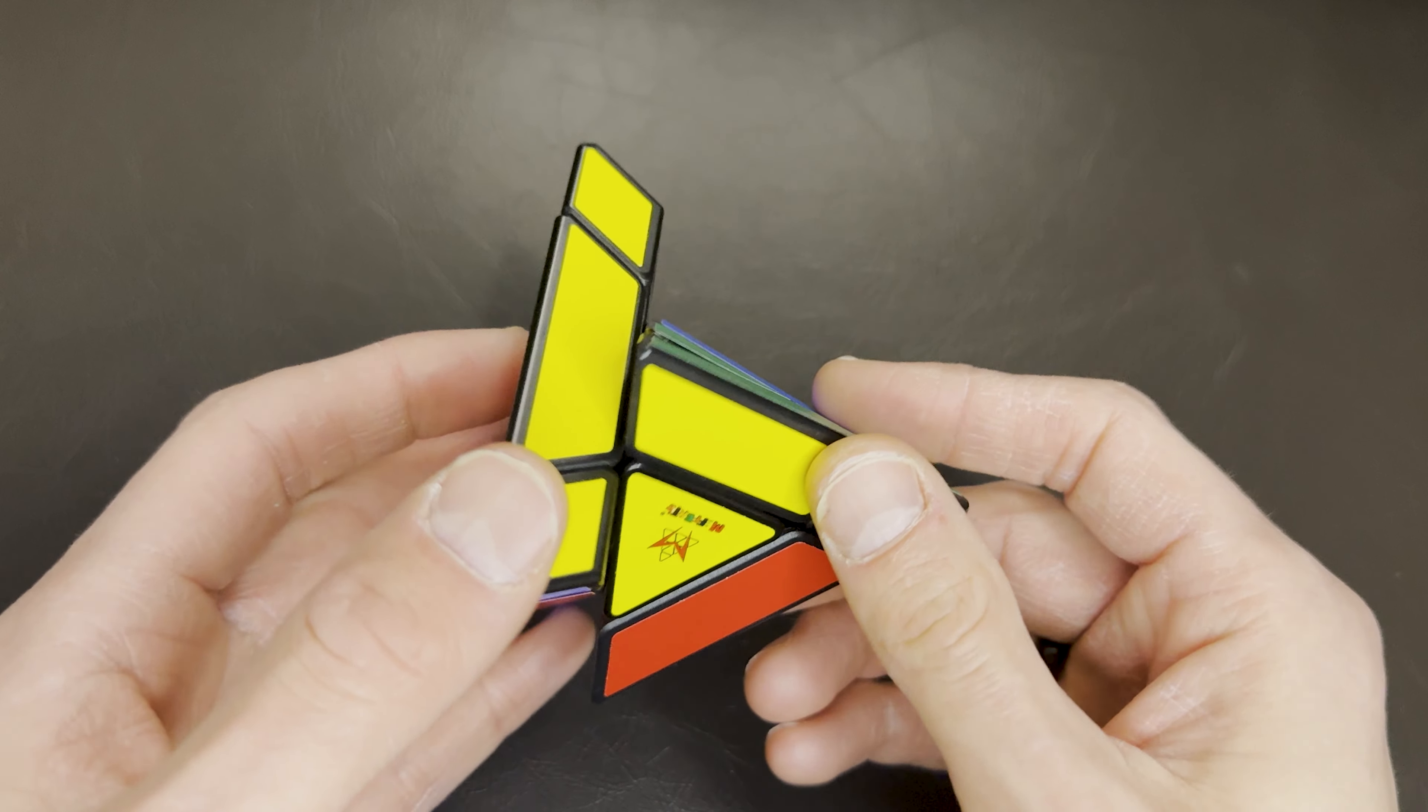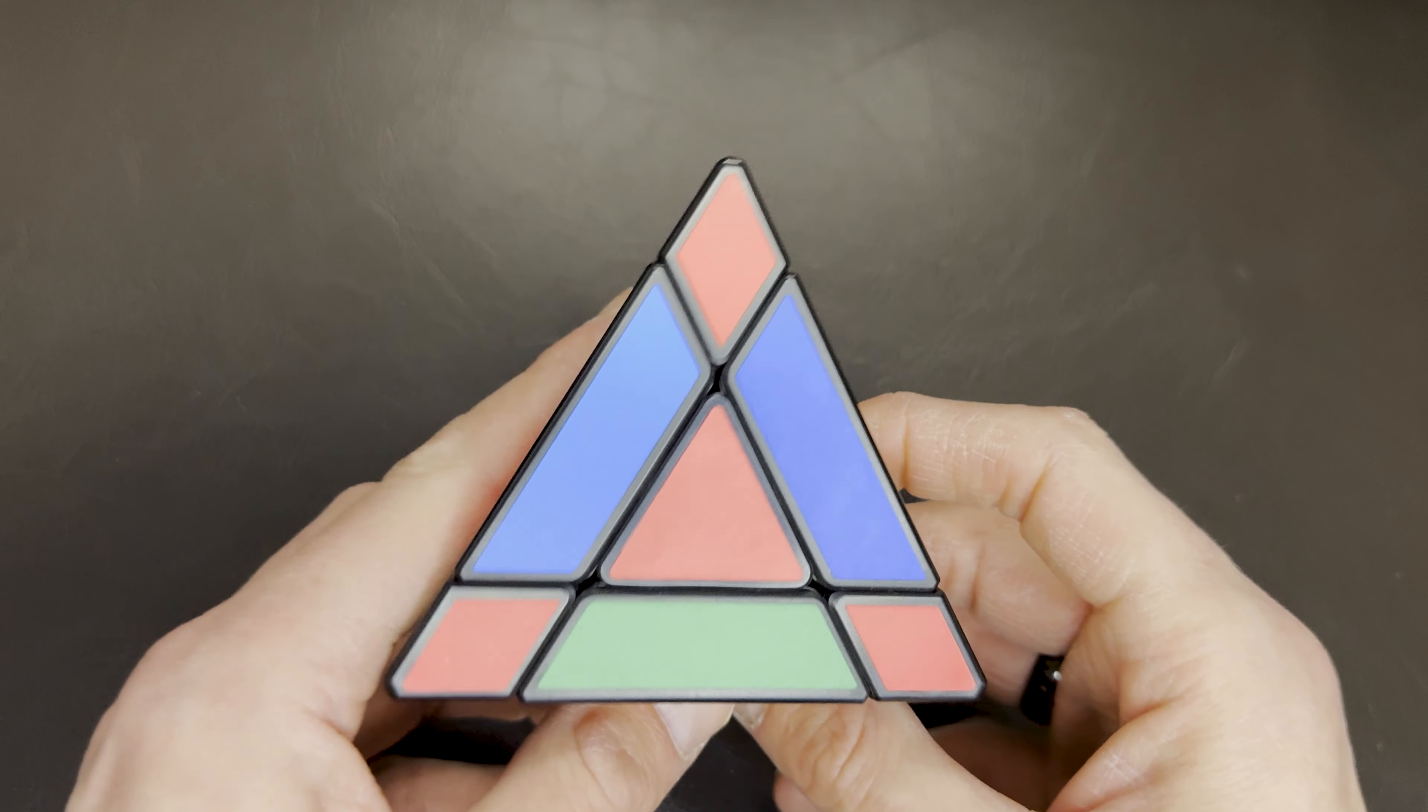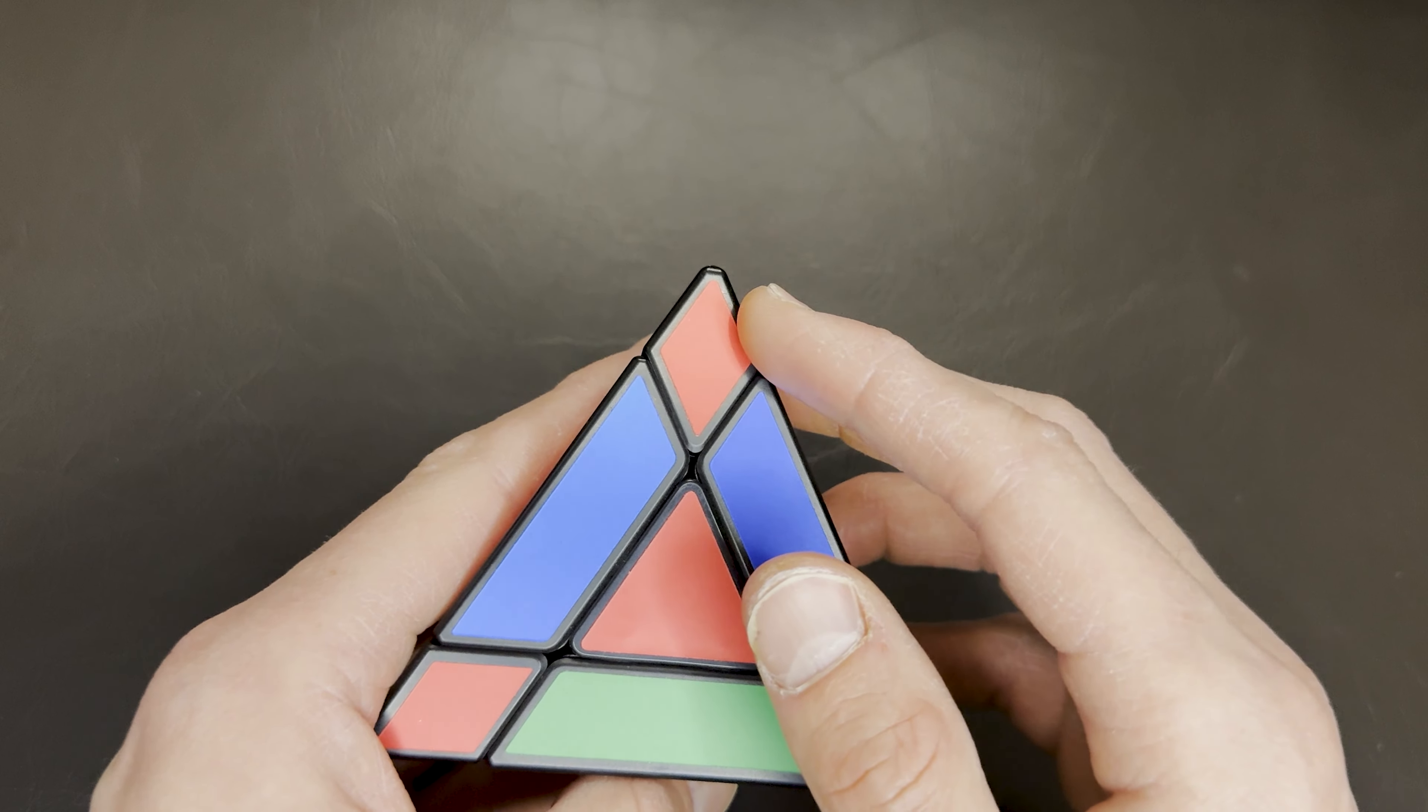The second thing we want to do is make sure that we line up all these other sides with the same color diamonds. Here's the red side and keep in mind it's not the color of the triangle, it's the color of the diamond.